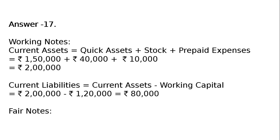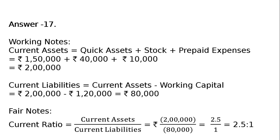Now, current ratio is equal to current assets upon current liabilities, that is Rs. 2,00,000 upon Rs. 80,000, which equals 2.5:1. And this is the final answer. Let's check in all the figures.